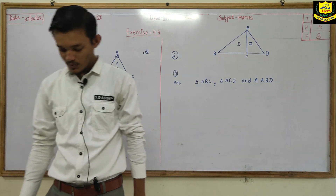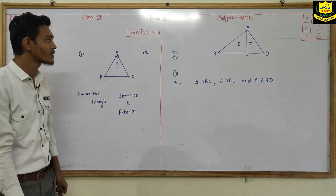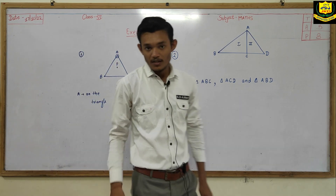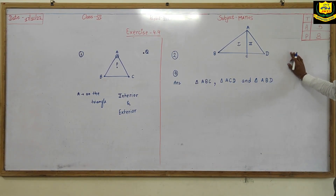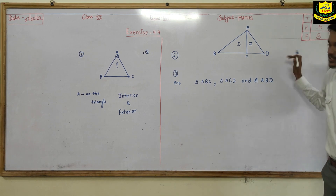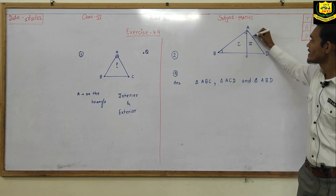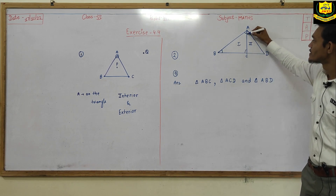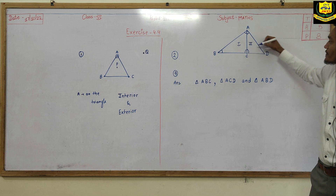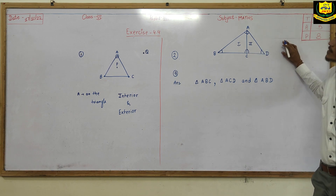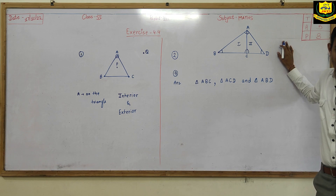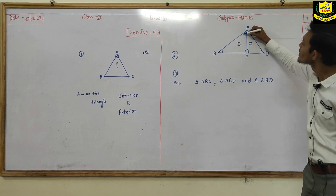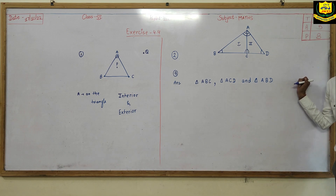Second, write the names of seven angles found in this figure. Let us calculate the number of angles. How many angles do you see in this figure? First, second, third, fourth, fifth, sixth — so where is the seventh angle? The complete angle A is called the seventh angle.